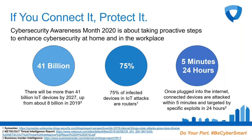Under this theme, NCSA and CISA are focusing on the Internet of Things with the message: if you connect it, protect it. There will be more than 41 billion IoT devices by 2027, up from about 8 billion in 2019. 75% of infected devices in IoT attacks are routers. Connected devices have been found to be attacked within five minutes of being plugged in and targeted by specific exploits within 24 hours. Cybersecurity doesn't stop at your laptop or smartphone — it's about every device you connect to the Internet.